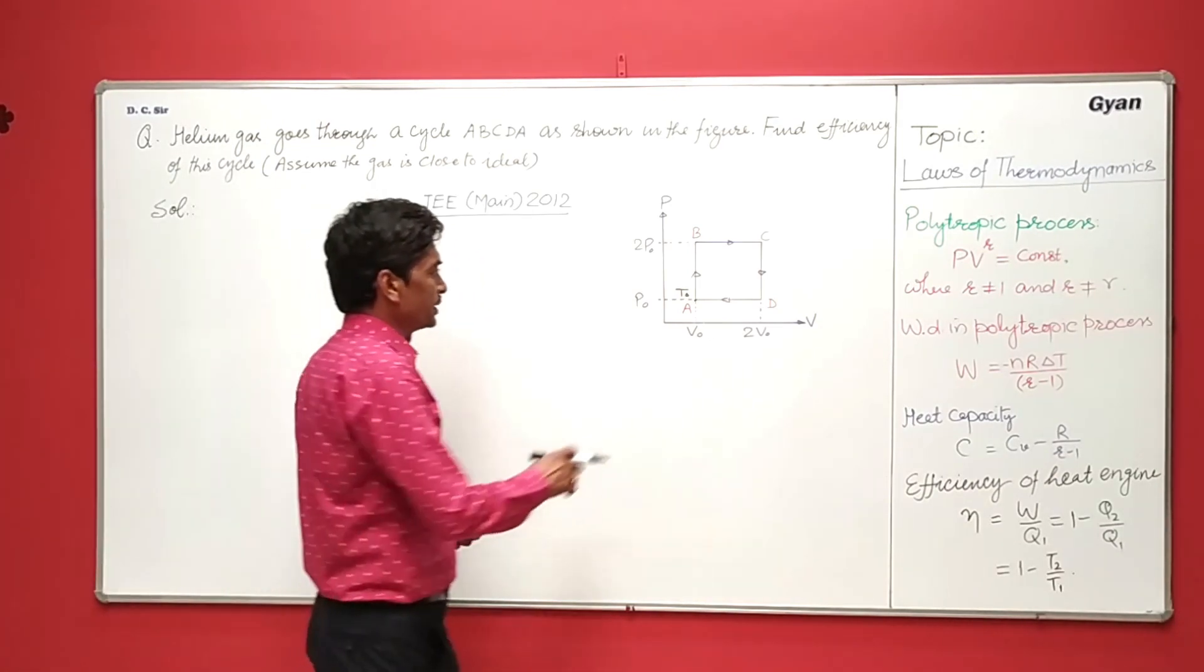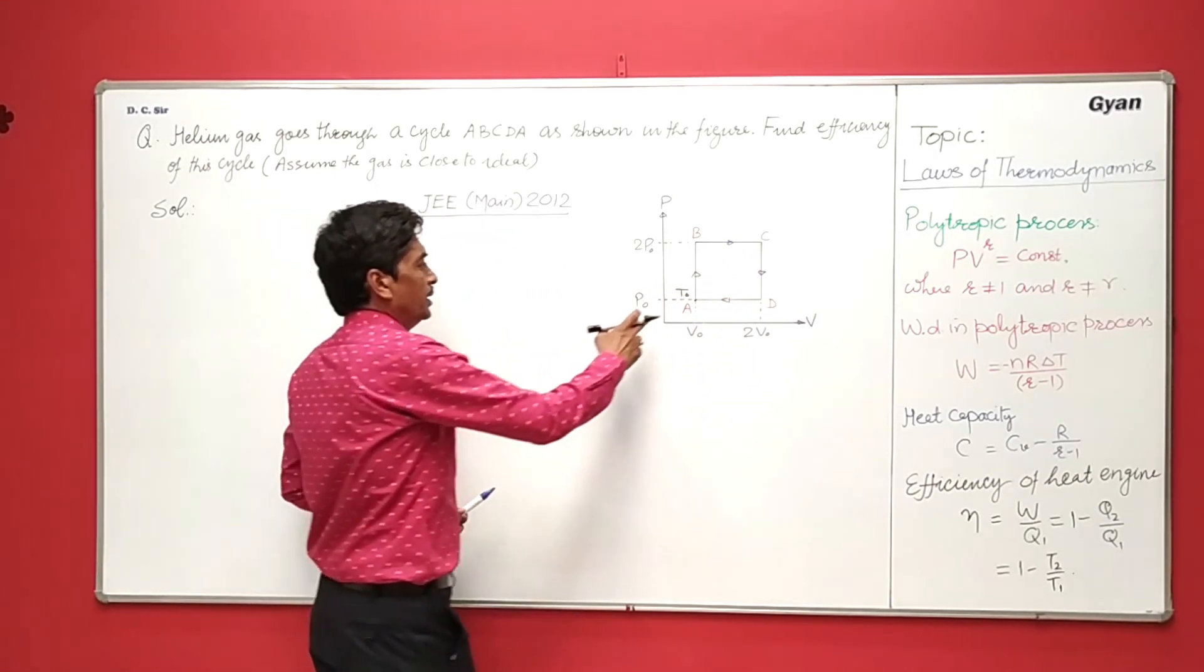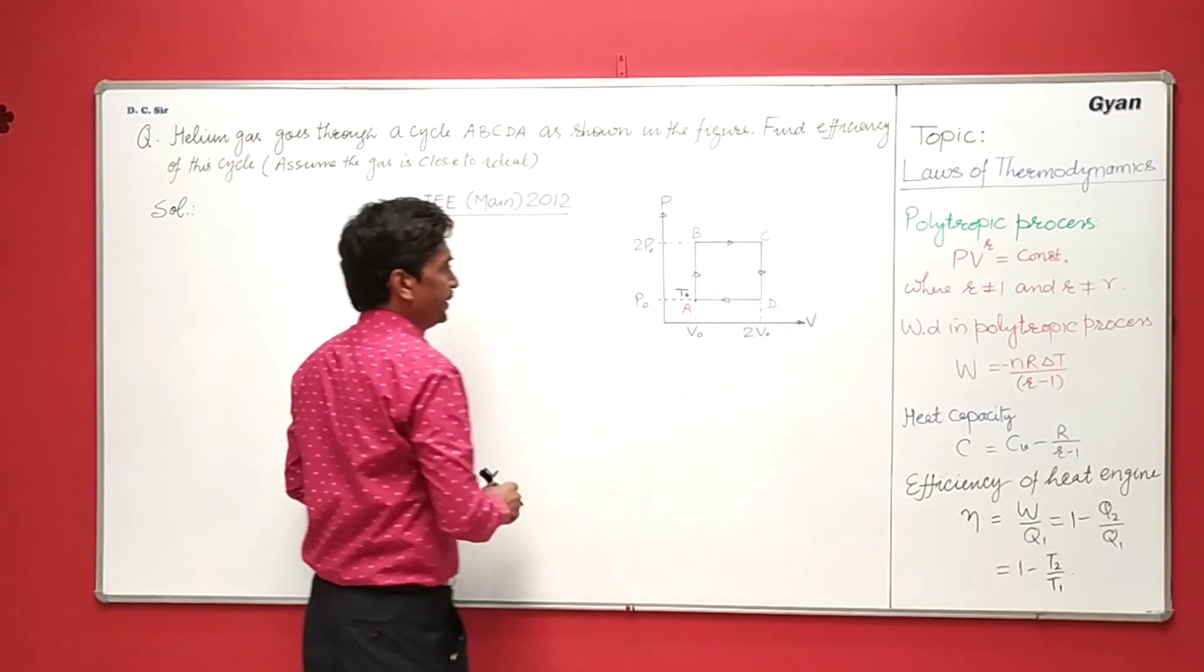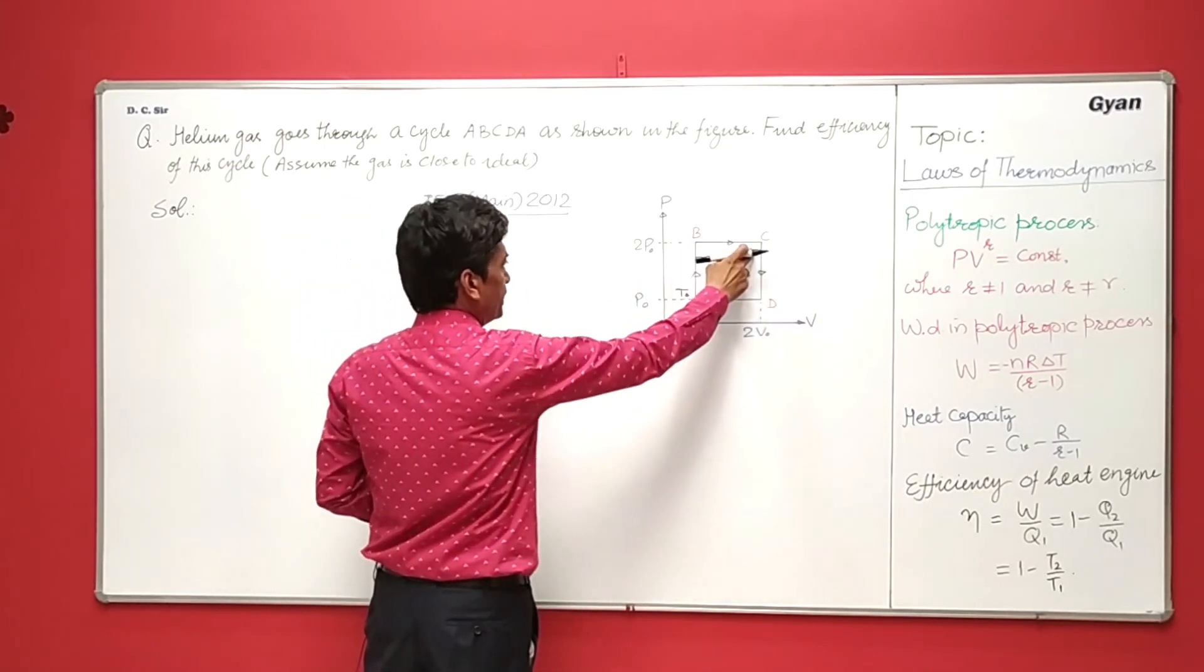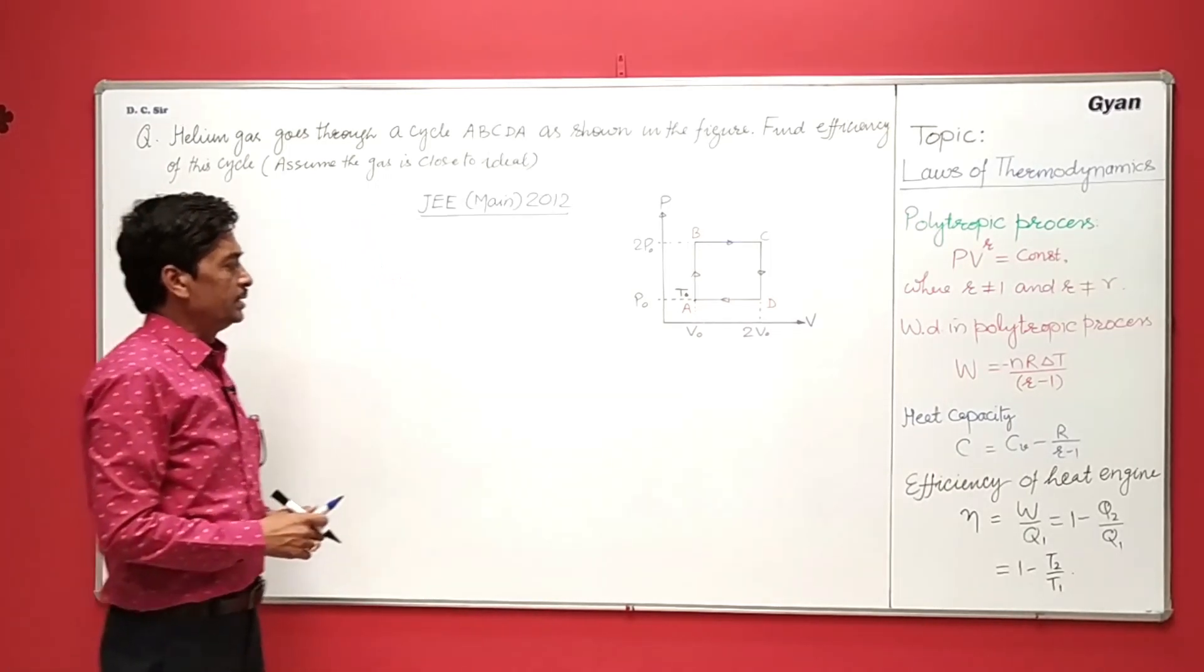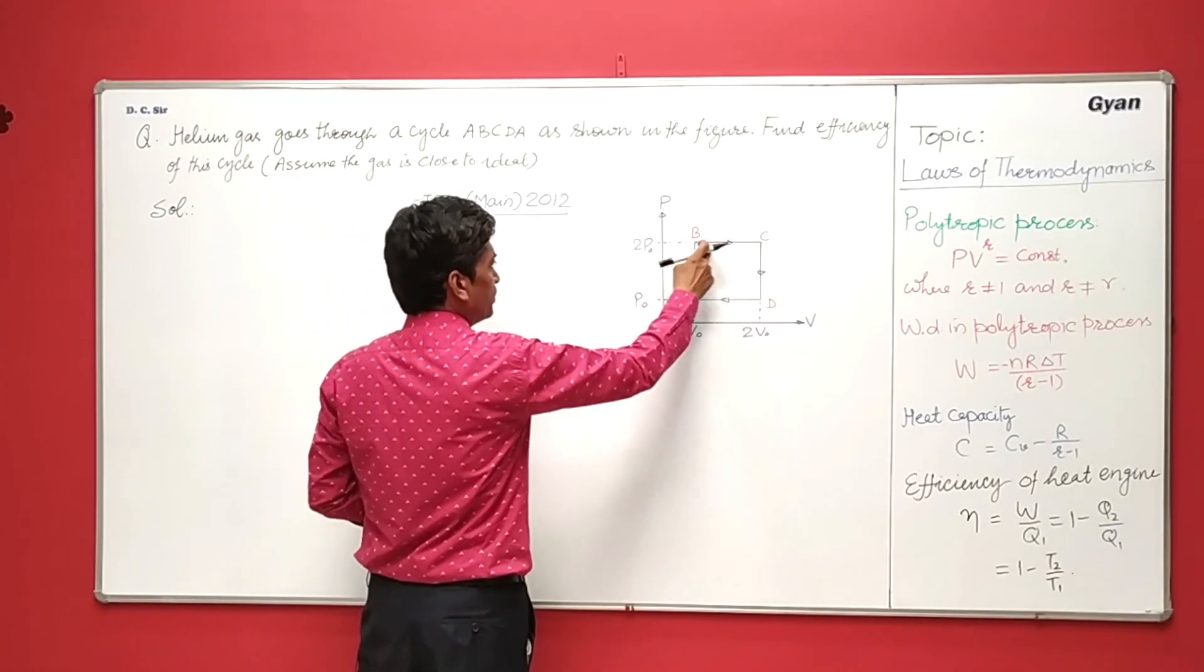Here you are given the cycle A, B, C, D, A. A to B is isochoric and C to D also isochoric, and B to C is isobaric and D to A is also isobaric. Heat is absorbed in this part A to B and B to C.